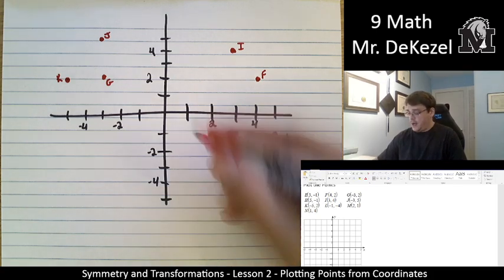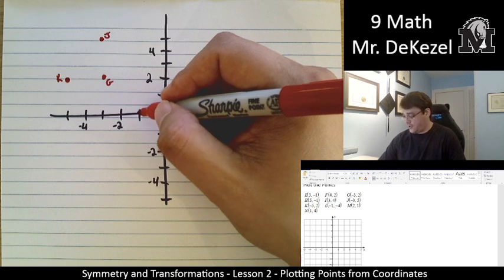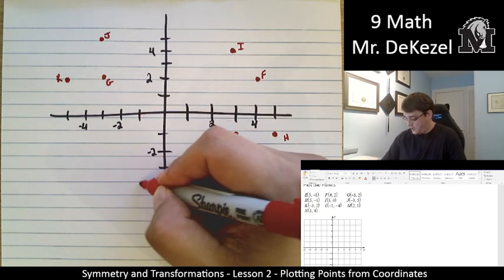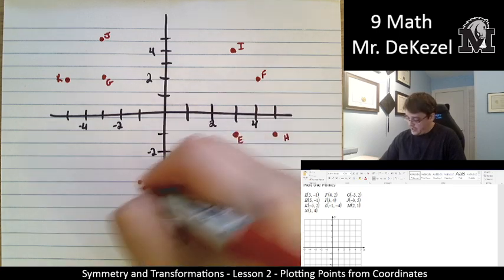L is minus 1, so left 1. And then minus 4, down 4. So that's over here. I'm going to go ahead and label that as point L.